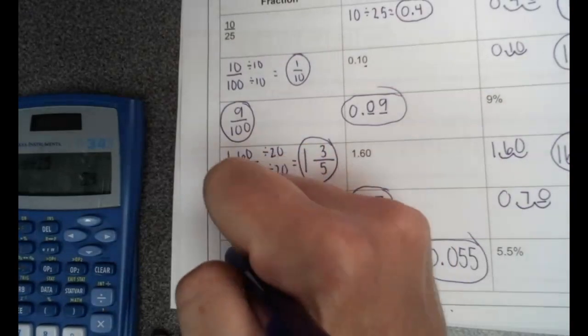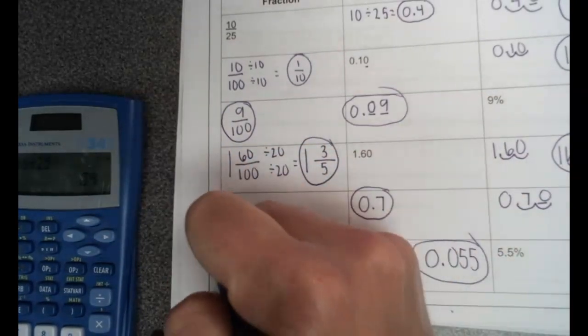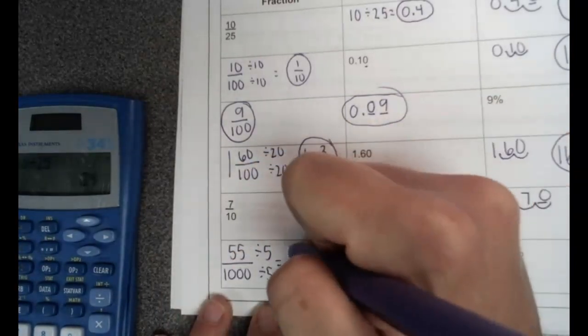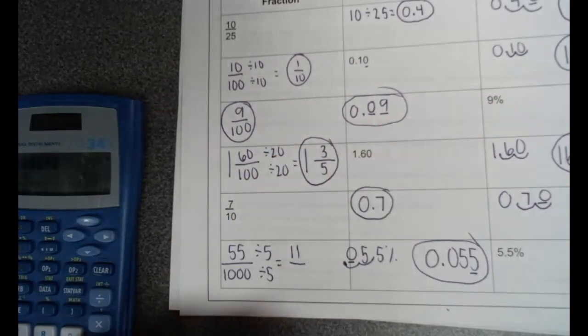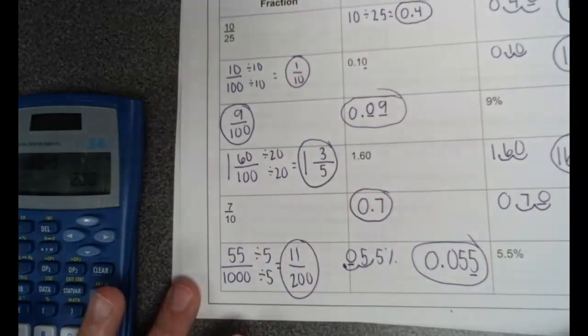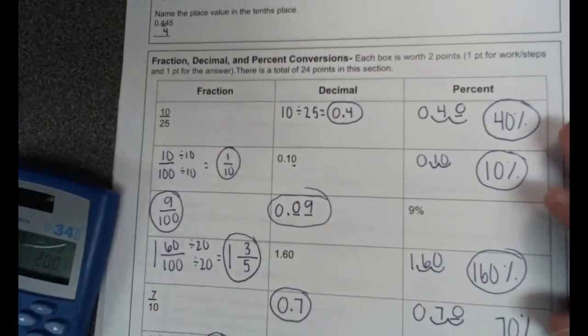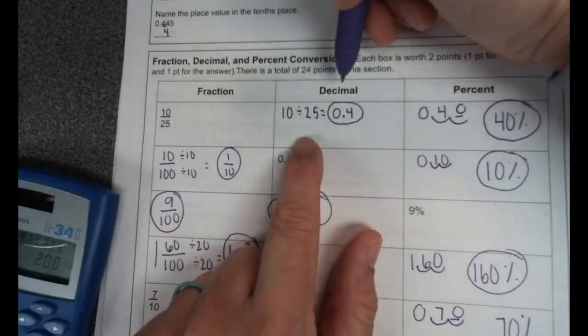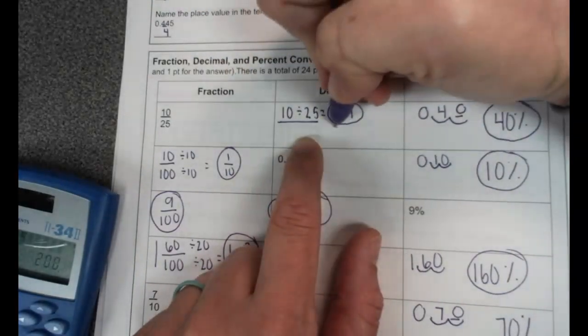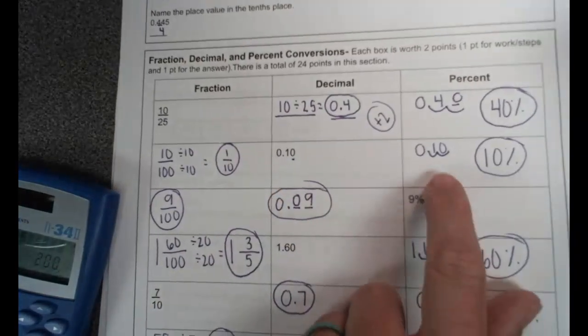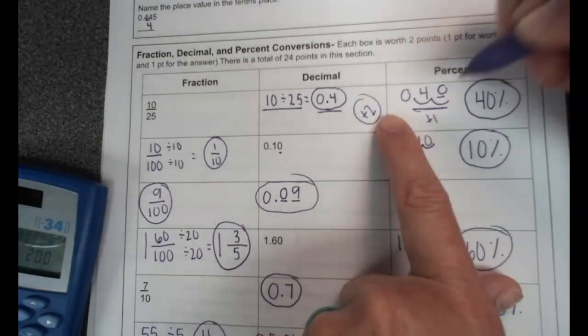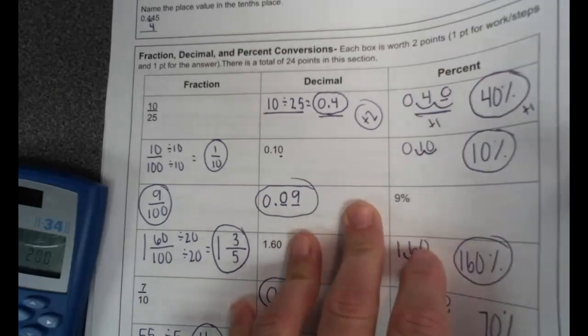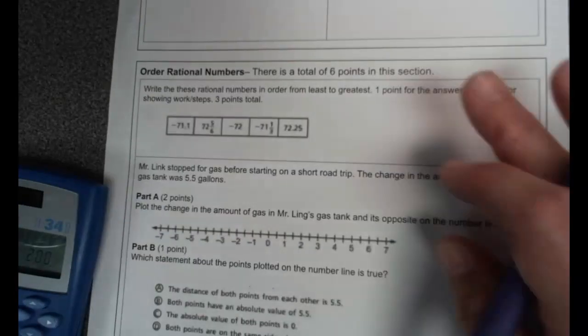And to write that as a fraction, that's 55 over 1000, because that five is in the thousandth spot. And I'm going to divide by five. 55 divided by five is 11, and then 1000 divided by five, we get 200, and that's your answer there. And if you will notice up here at the direction, it states each box is worth two points: one point for work slash the steps and one point for the answer. So if I look at this box, here's my work, here's my answer, so that would be two points. On this one, my steps are showing moving the decimal and then my answer. If you're not doing the steps or the work part, you won't be receiving full credit because I need to make sure you're understanding the meaning behind it.